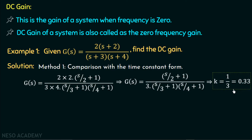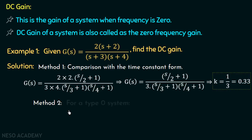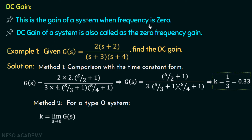We have calculated the DC gain of this system by comparing it with the time constant form. We have one more method to find out the DC gain of this system — method number 2. For a type 0 system, we can write the DC gain k as the limit of s tending to 0 of G(s). The DC gain is the gain of a system when frequency is 0, so we will simply put the s term equal to 0 in this transfer function, and hence calculate the DC gain.